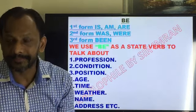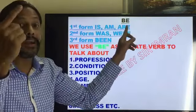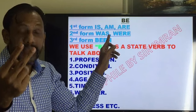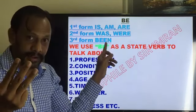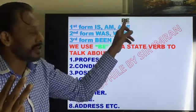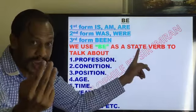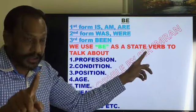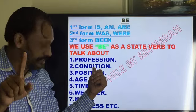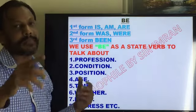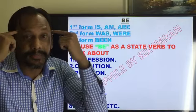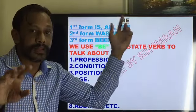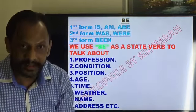Let me recap. What are we learning? We are learning be. The first form of be is is/am/are, the second form is was/were, and the third form is been. We use be — is/am/are, was/were, been — as a state verb, not a helping verb. When used as a state verb, it talks about profession, condition, position, age, time, weather, name, address, etc. Keep in mind: these are not helping verbs. These are be verbs.